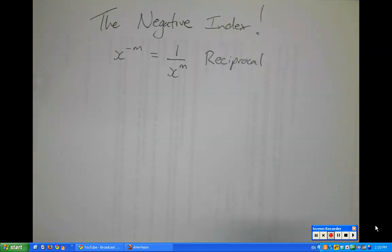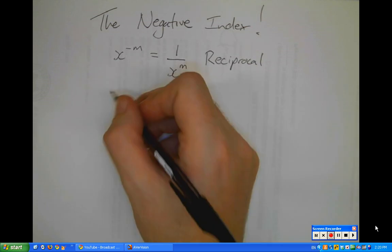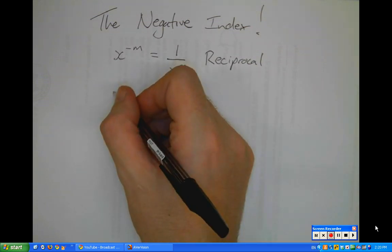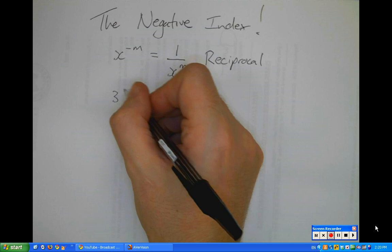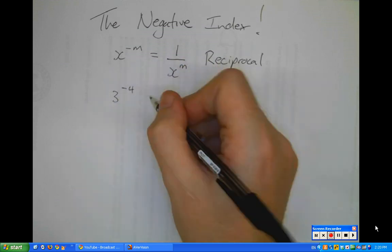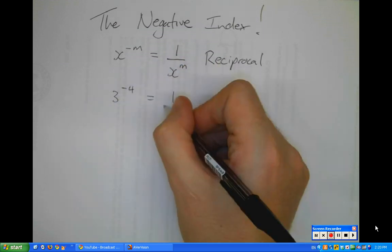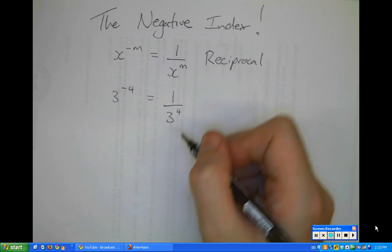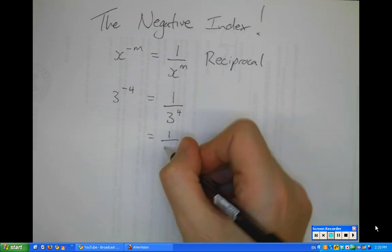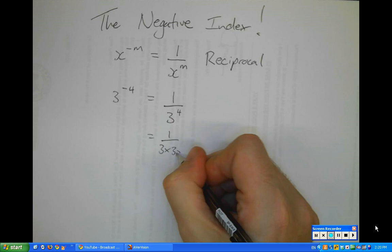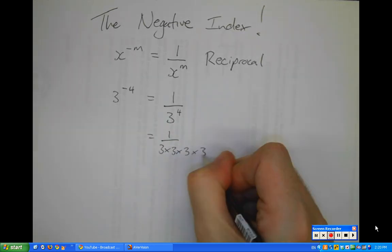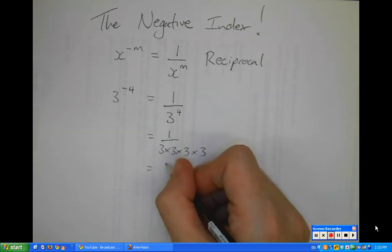So let's look at this in a practical sense. If I had the number 3 to the power of minus 4, that would equal 1 over 3 to the power of positive 4, which equals 1 over 3 times 3 times 3 times 3, which equals 1 over 81.